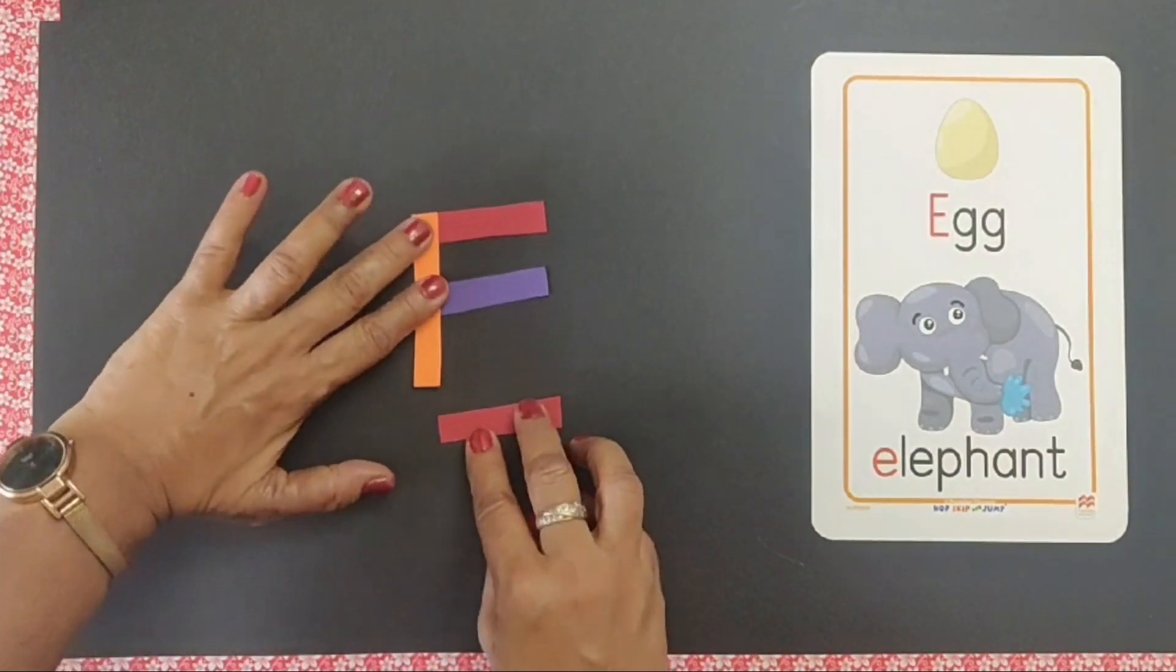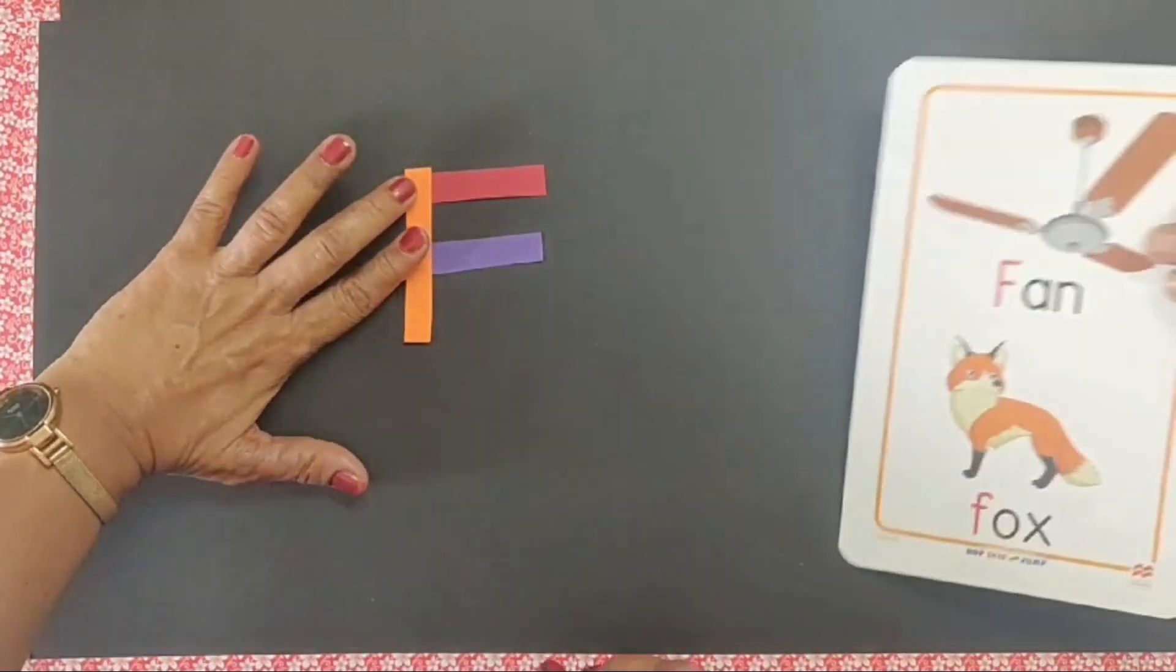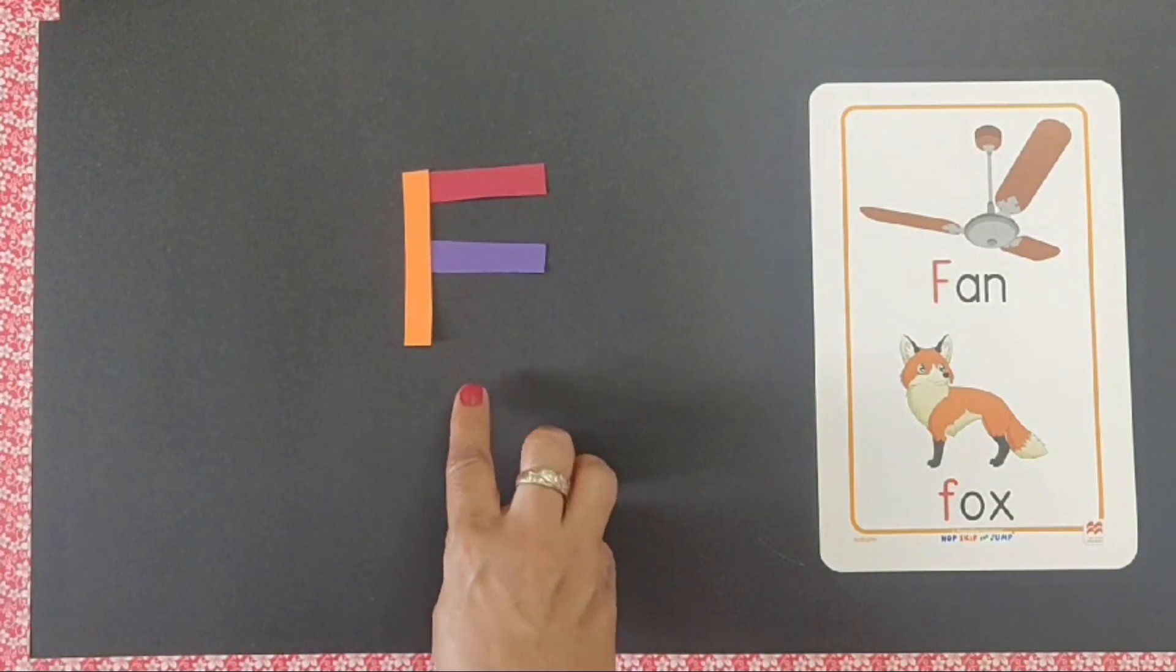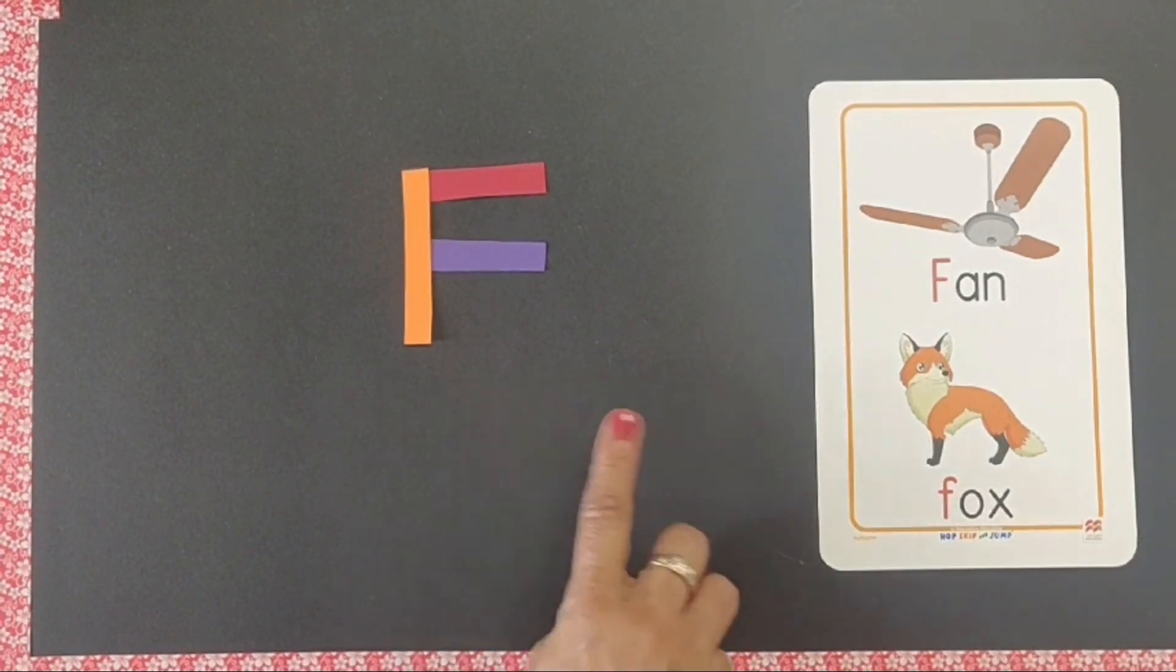See the magic, just remove one of the strips and you get F. F says fuh, F for fan.